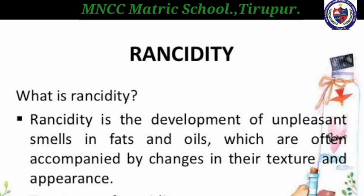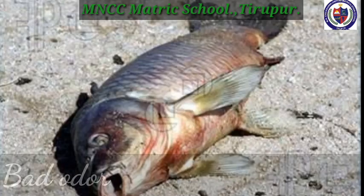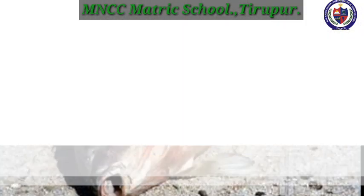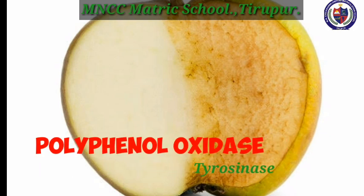Next we move to rancidity of fishes and meat. Rancidity is the development of unpleasant smell in fats and oils, which is often accompanied by changes in their texture and appearance. When fresh oil undergoes rancidity, the color of the oil will change. Fishes and meat containing high levels of polyunsaturated fatty acids undergo oxidation, causing bad odor when exposed to air or light.